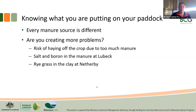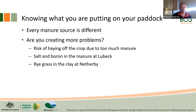It's important to know what you're putting on your paddock — every manure source is different. At BCG I'm lucky enough to send quite a few off for sampling and every single one has been different and would have had different effects if spread on a paddock. Think about whether you're creating more problems down the track: if you're putting too much out, especially manure that's high in nitrogen, you risk haying off the crop. At the Lubeck site we saw higher salt and boron levels in the manure than is ideal. At Netherby, after we spread the clay we got an opening rain and had ryegrass come up in all the clay plots — the unclayed plots didn't have a blade of ryegrass, so the clay we spread must have been contaminated with ryegrass seed.